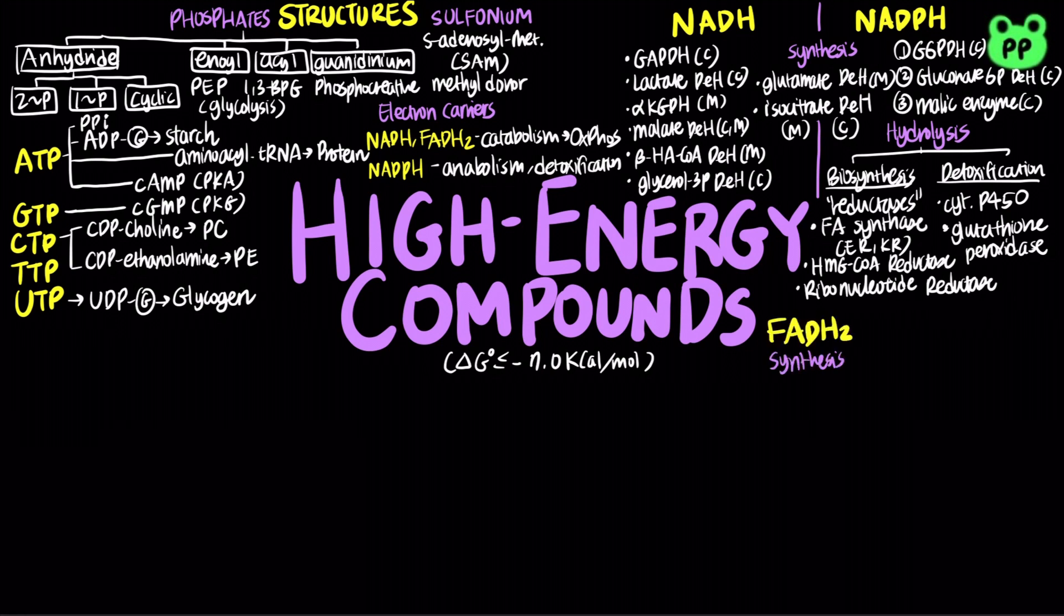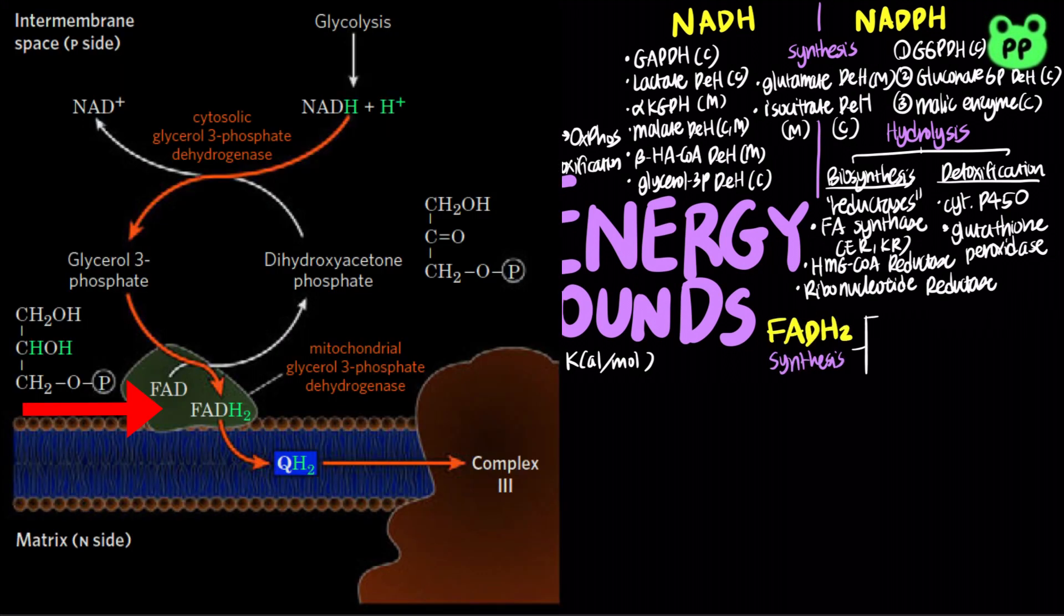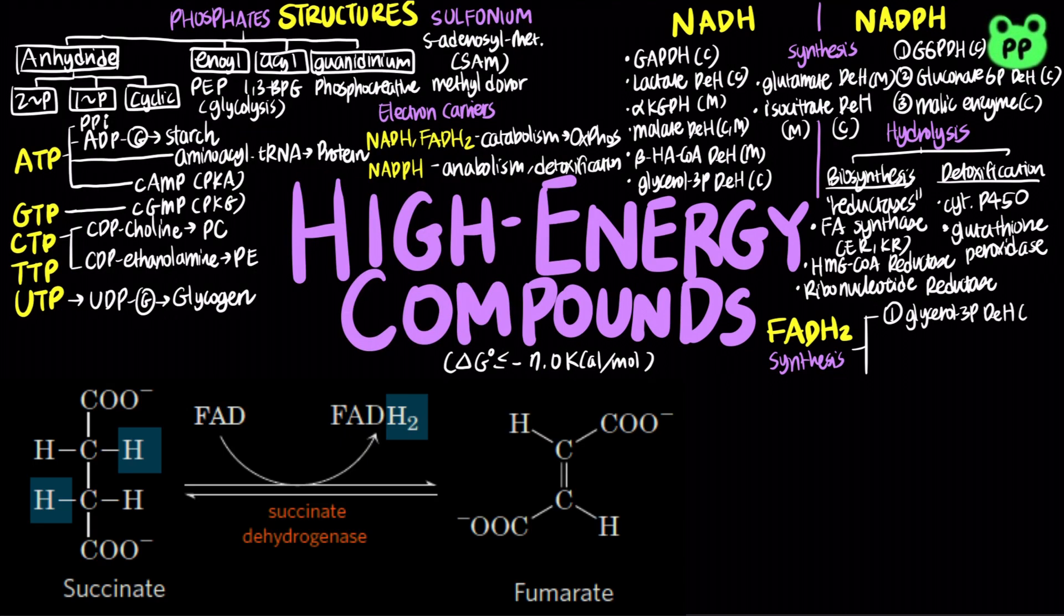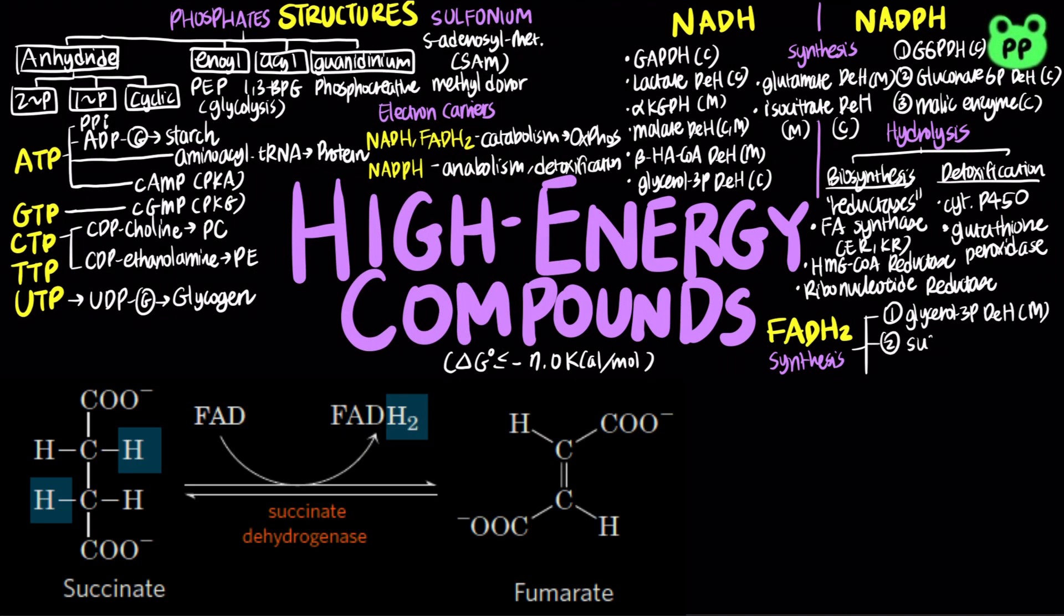Synthesis of FADH2 can be catalyzed by mitochondrial glycerol-3-phosphate dehydrogenase, succinate dehydrogenase from the TCA cycle, and fatty acyl-CoA dehydrogenase from beta-oxidation of fatty acids, all of which occurs in mitochondria.